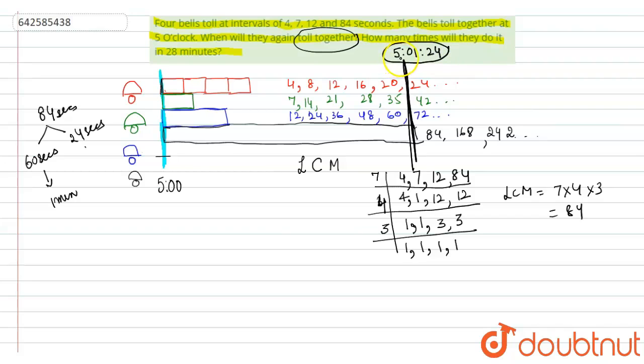Now, in 28 minutes, how many times are they going to ring? In 28 minutes, that's 28 into 60 seconds. If I divide this by 84, because after every 84 seconds they are ringing, I will find out the number of times they are going to ring. So it is 20. In 28 minutes, they are going to ring 20 times.